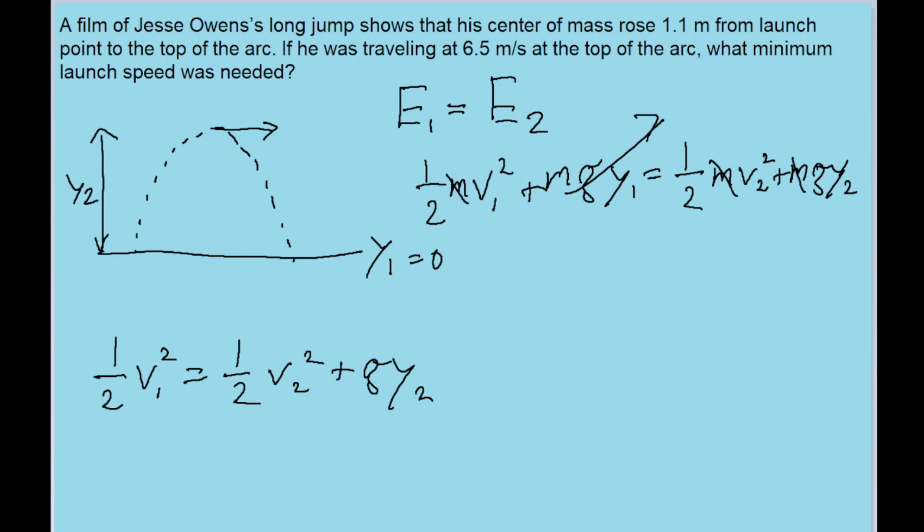Now we want to solve this equation for V1 since that is going to correspond to the initial launch speed. Just to get these halves out of the way, I'm going to multiply this equation by 2. So V1 squared is equal to V2 squared plus 2GY2. And last, I'm going to take the square root. So V1 is equal to the square root of V2 squared plus 2GY2.